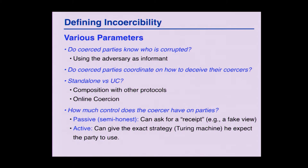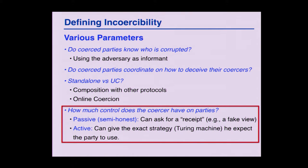Another question is standalone security versus UC security. Here, UC security is not just about composition alongside any protocol or environment. The key point is that in UC, we can have an online coercer — the coercer can adapt his strategy depending on what happens in the protocol. And the final question is: what type of coercion requests do we allow? Do we want a protocol that just protects against passive coercion, where the party plays its protocol and just needs to produce a receipt? Or do we want something that allows more invasive, so-called active coercion?